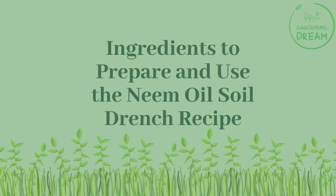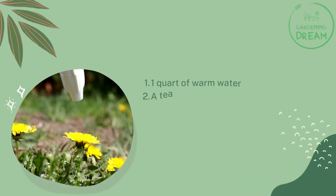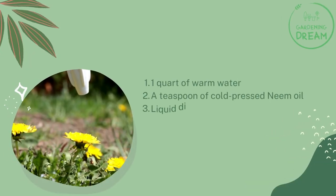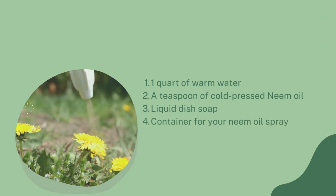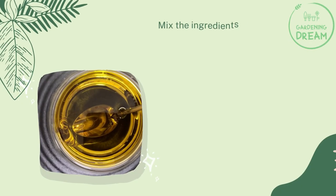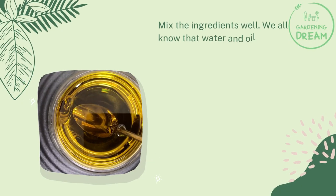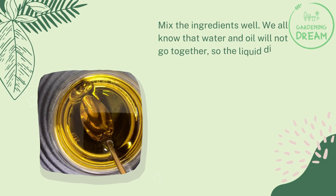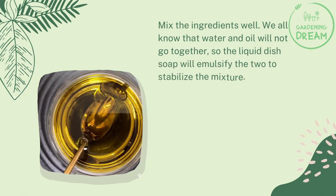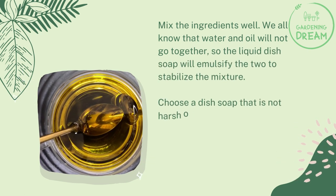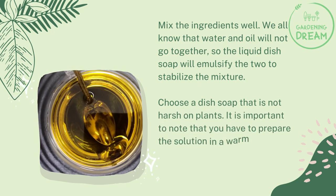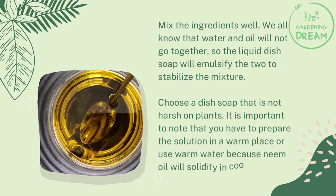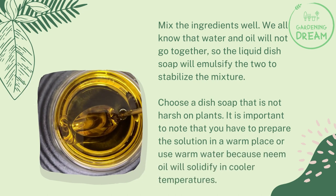Ingredients to prepare the neem oil soil drench recipe: 1 quart of warm water, a teaspoon of cold-pressed neem oil, liquid dish soap, and a container for your neem oil spray. Mix the ingredients well. Since water and oil will not go together, the liquid dish soap will emulsify the two to stabilize the mixture. Choose a dish soap that is not harsh on plants.